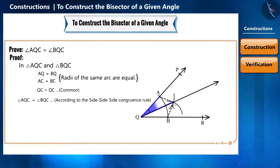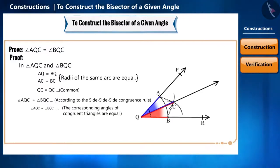And now, we can see that angle AQC is equal to angle BQC because the corresponding angles of congruent triangles are equal. So, friends, not only did we construct an angle bisector, but we also proved that the construction is mathematically correct.